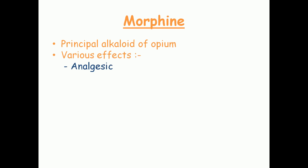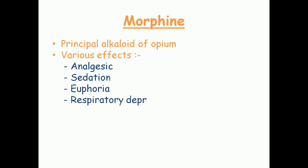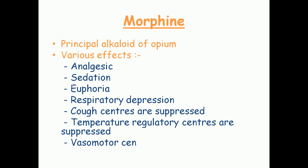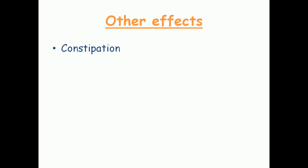Morphine has various effects including: analgesic effect — decreasing pain; sedation; euphoria — a state of hyper happiness; respiratory depression; suppression of cough centers; suppression of temperature regulatory centers; and inhibition of vasomotor centers which are involved in blood pressure regulation.